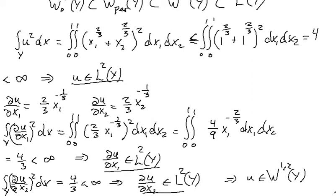Moreover, we do the same for the partial derivative of u with respect to x₂. It's equal to 4 over 3, due to the symmetry here. And it's less than infinity. So the partial derivative of u with respect to x₂ must also be a member of L² of Y. What we have found is that u is a member of L², ∂u/∂x₁ is a member of L², and ∂u/∂x₂ is a member of L². And thus we conclude that u is a member of W^(1,2) of this capital Y.